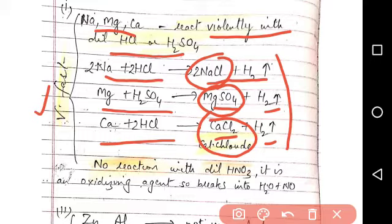No reaction occurs with dilute nitric acid, dilute HNO3, because it is an oxidizing agent. So it breaks down into H2O + NO.